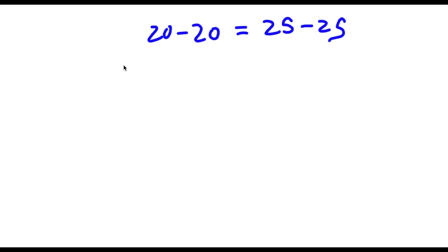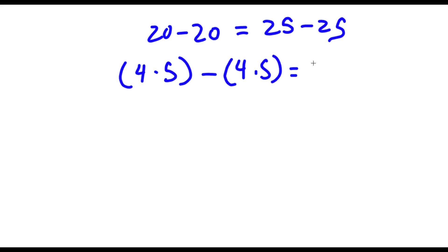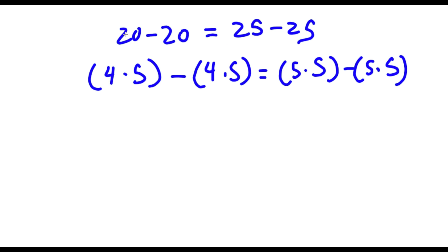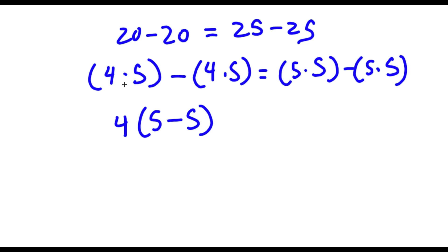Now, 20 is the same thing as 4 times 5. So now I have 4 times 5 minus 4 times 5 is equal to 25, which is 5 times 5 minus 5 times 5. I simply substituted 4 times 5 for 20 and 5 times 5 for 25. Now this is the same thing as 4 times (5 minus 5). All I did was factor out 4 from both terms. And this is the same thing as 5 times (5 minus 5) — I factored out 5 from both terms.